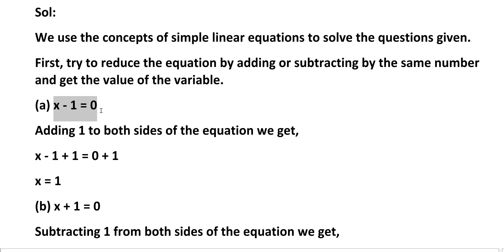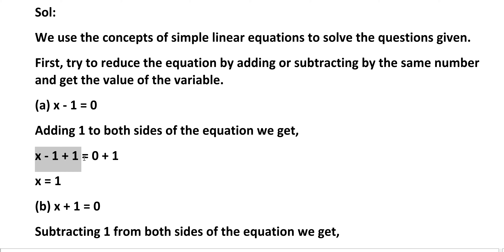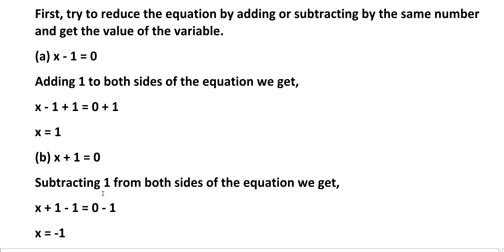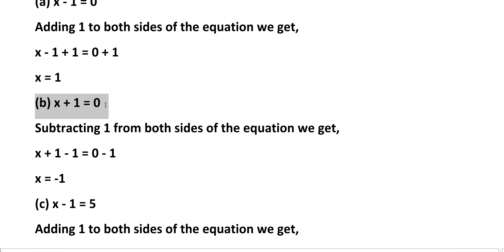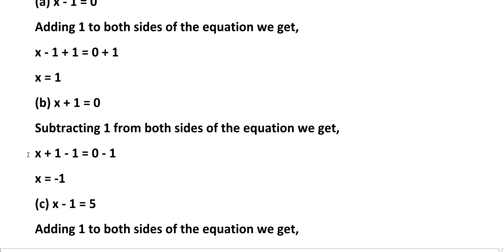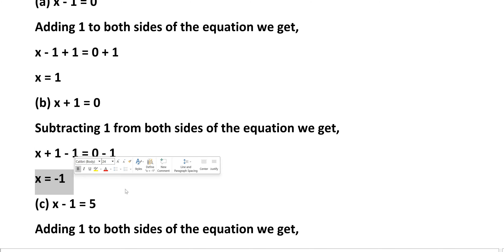A: x minus 1 equals 0. Adding 1 to both sides of the equation we get x minus 1 plus 1 equals 0 plus 1, that is x equals 1. B: x plus 1 equals 0. Subtracting 1 from both sides of the equation we get x plus 1 minus 1 equals 0 minus 1, that is x equals minus 1.